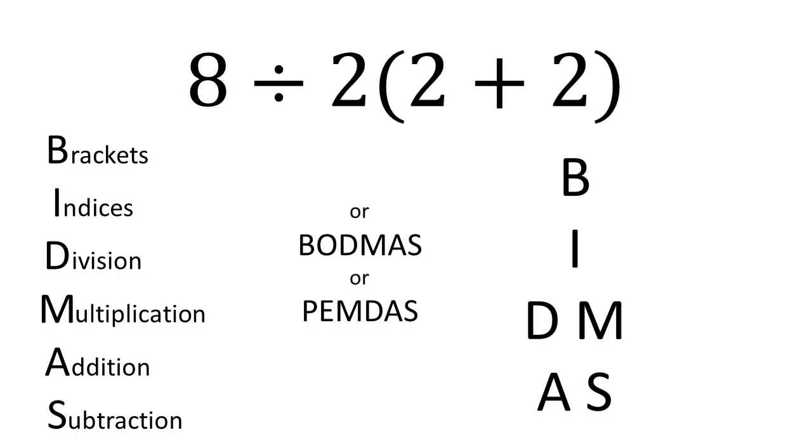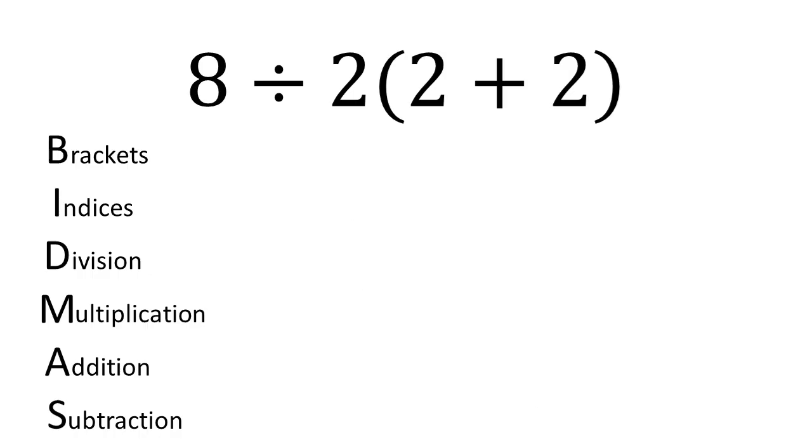Now we've got this order, we can find a value for our expression. So looking at our expression, 8 divided by 2 times by a bracket with 2 plus 2 in there, looking back to BIDMAS, the first thing we've got is our brackets, so we're going to complete everything inside the brackets first. That's nice and easy. 2 plus 2 is 4. So we've now got 8 divided by 2 times 4.